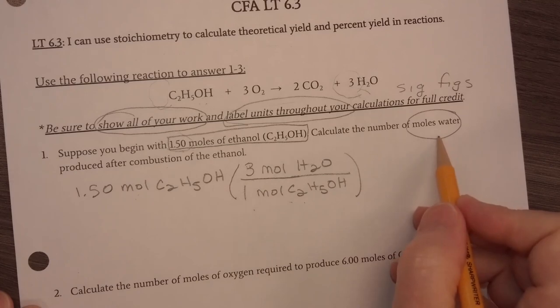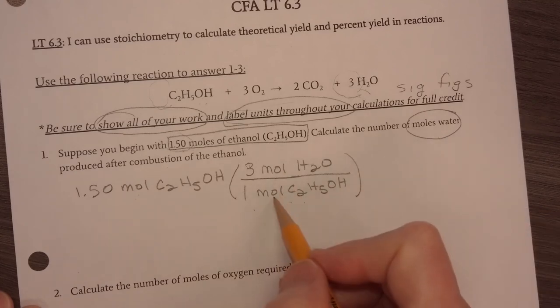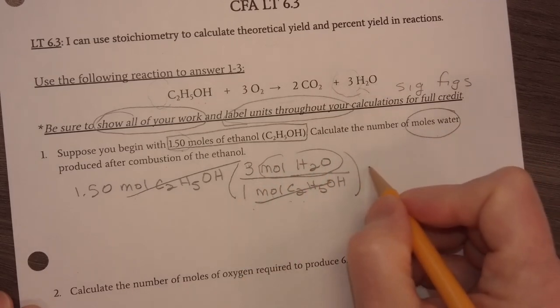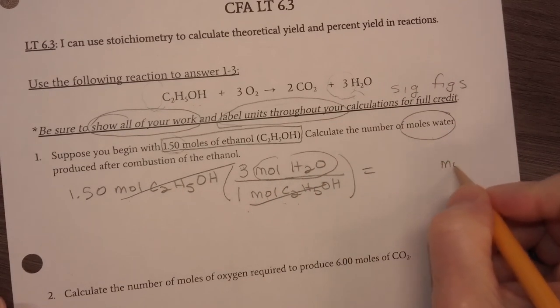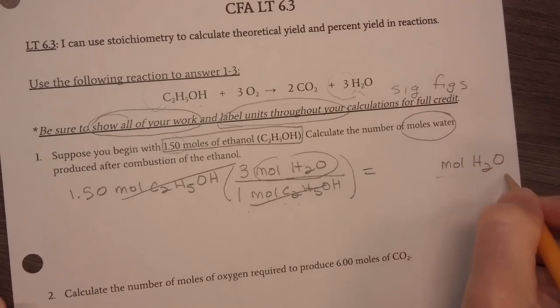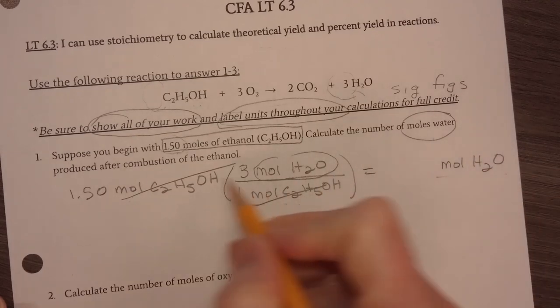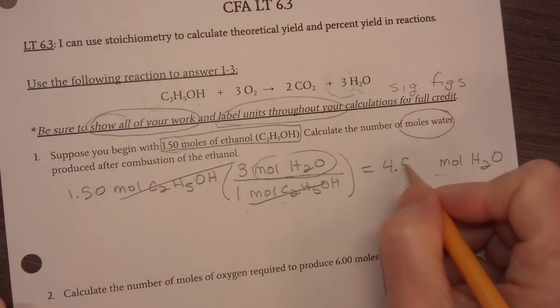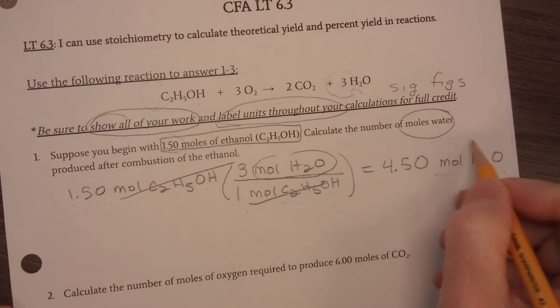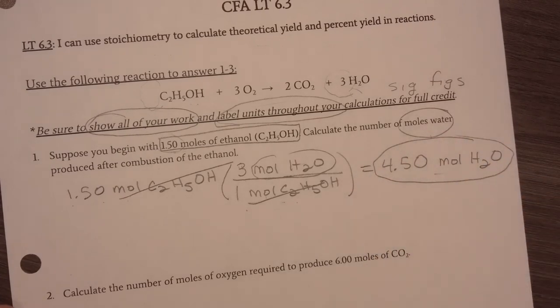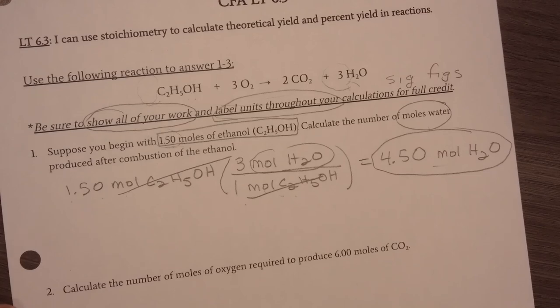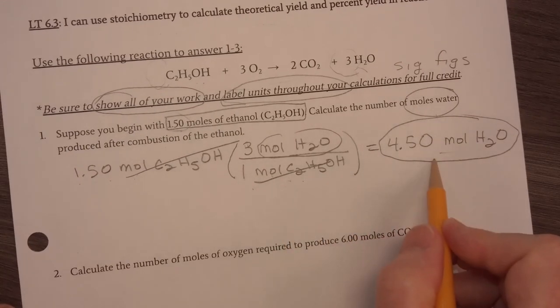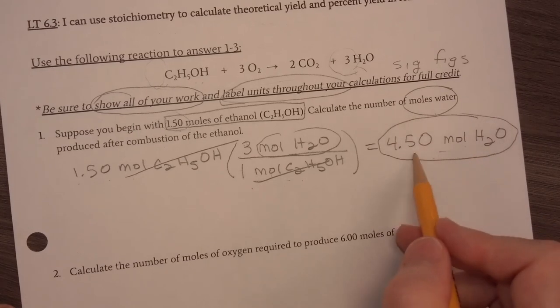Since I want moles of water and nothing else, this is only one step. My moles of ethanol divide out. I now have moles of water. Again, I need to have moles of water in my answer to get full credit. 1.50 times 3 is 4.5. I need to make sure I have 0. I have to have 3 units in my answer. This was worth two points. One point for having the mole ratio. One point for having the correct answer with units and significant figures.